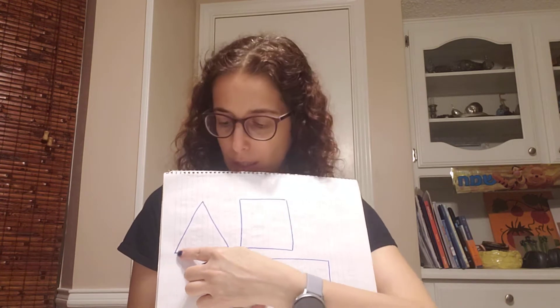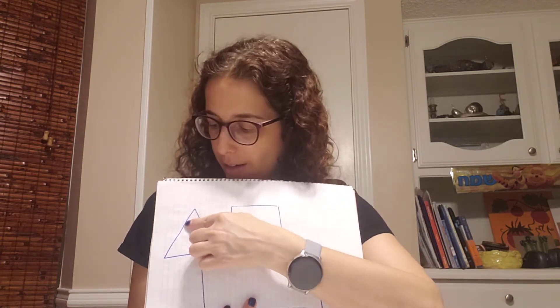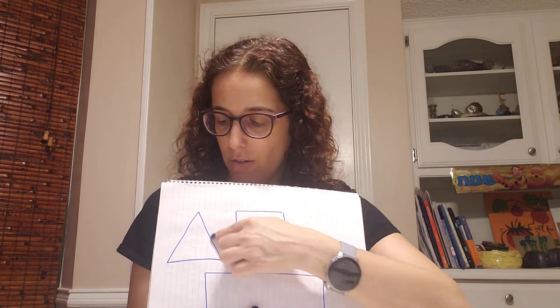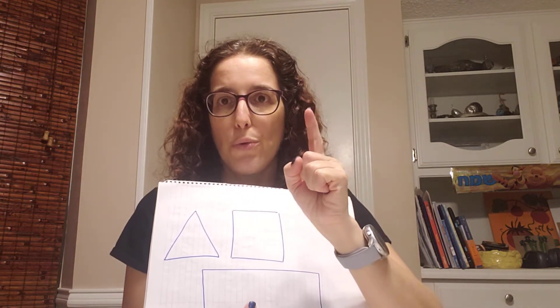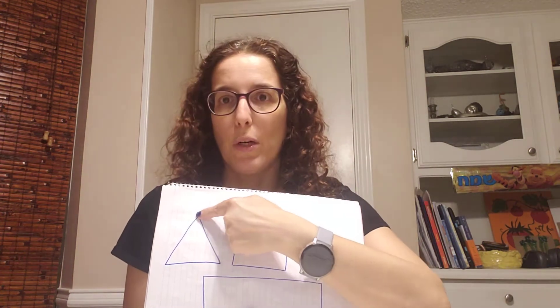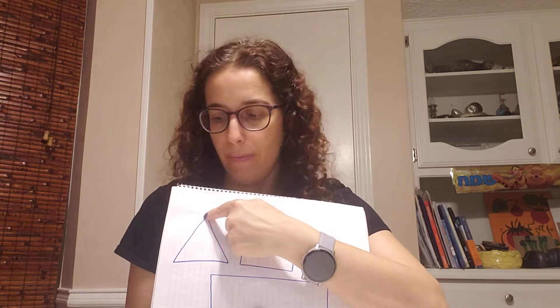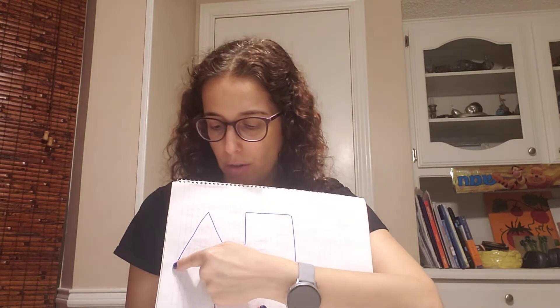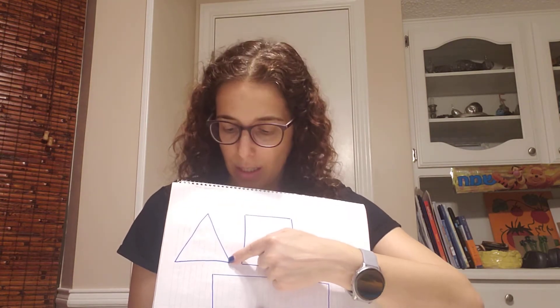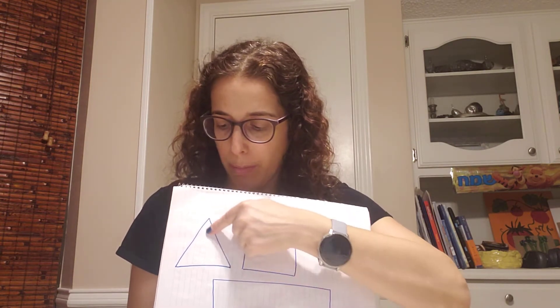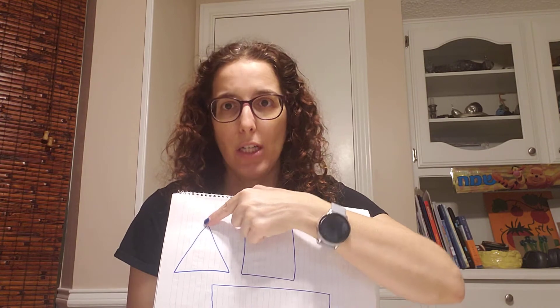A triangle has three sides — one, two, three. So how do we draw a triangle? We're going for one spot at the top, we're going a little bit to the side down, crossing to the other side and going back to where we started.